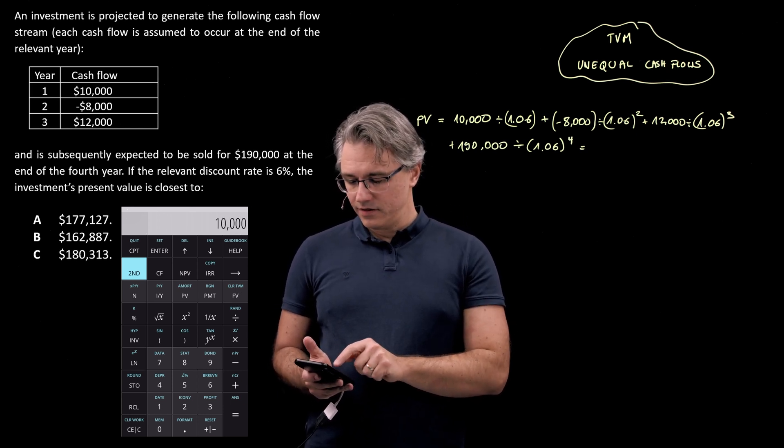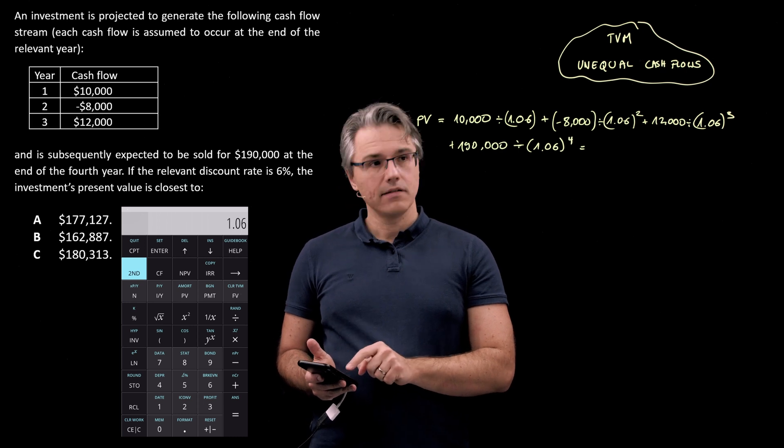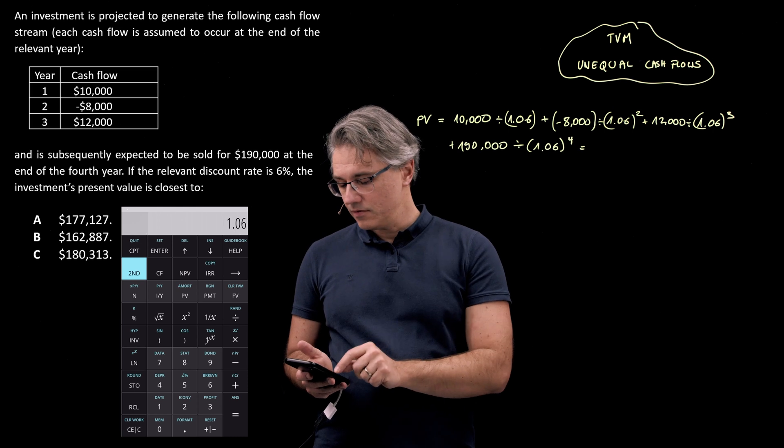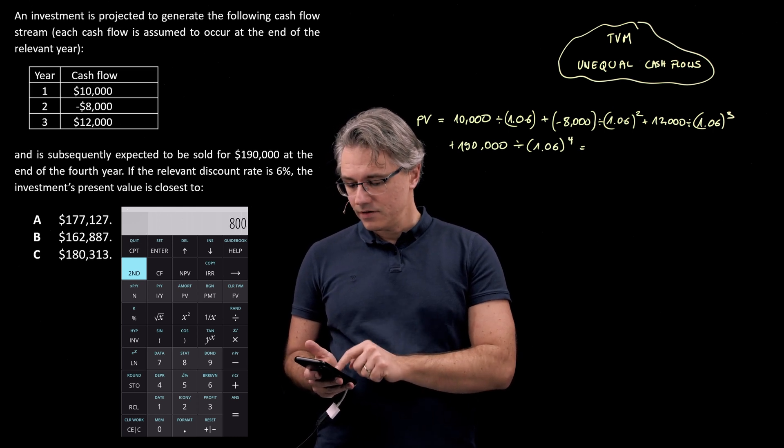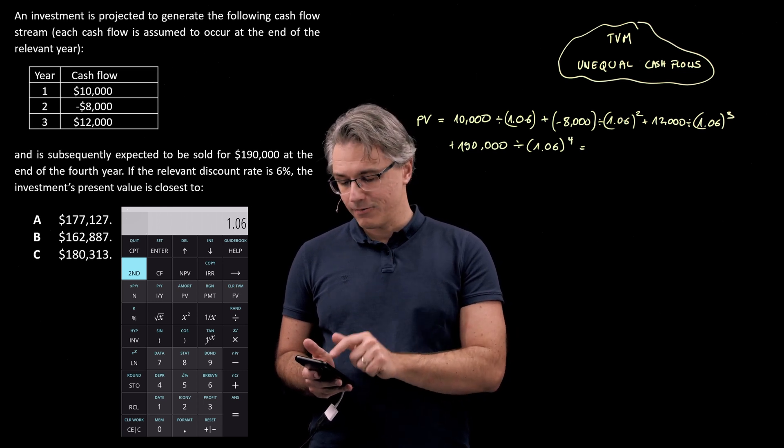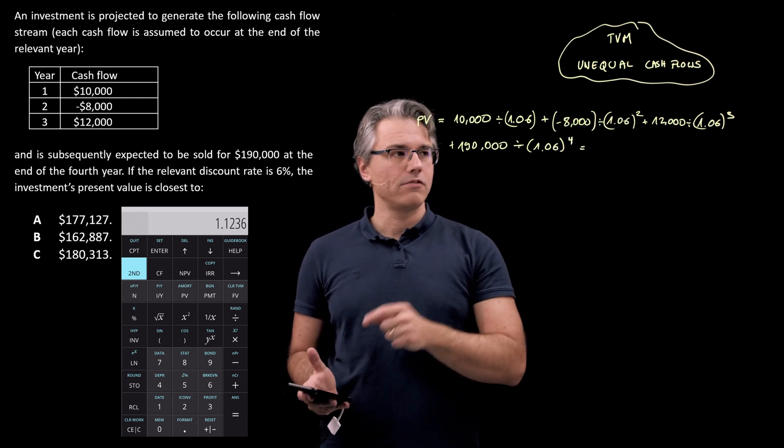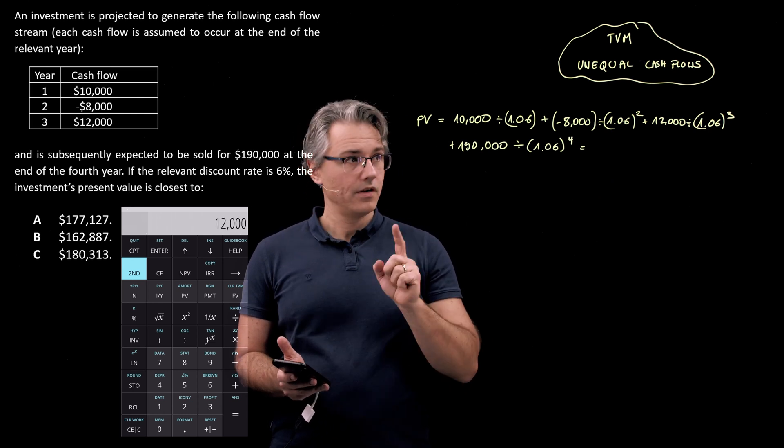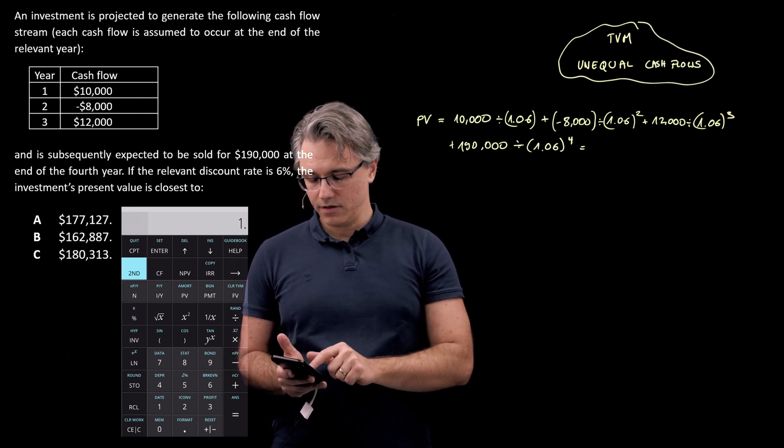10,000 divided by 1.06. Okay, I've got a plus and a minus here, so I'm just going to do minus 8,000 divided by 1.06. Press the x squared key to raise this to the power of 2.